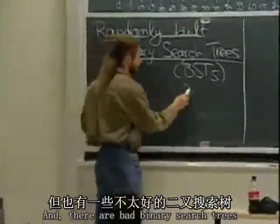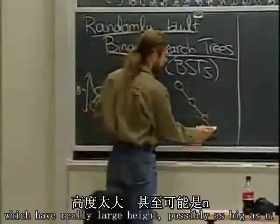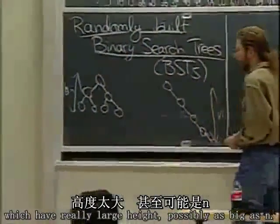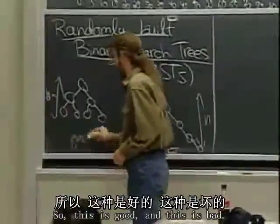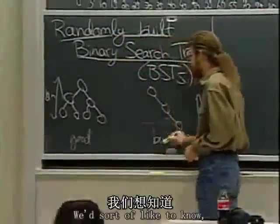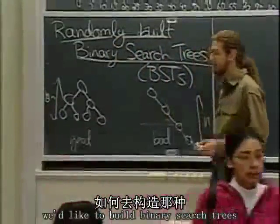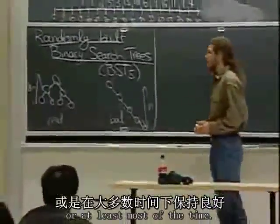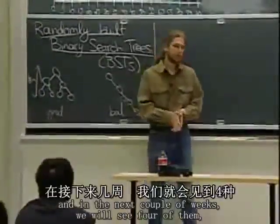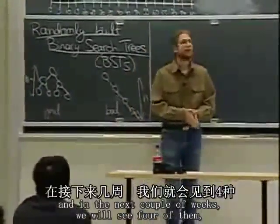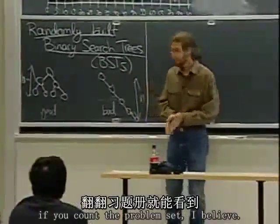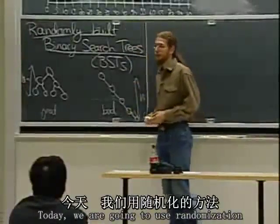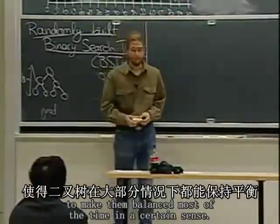And there are bad binary search trees which have really large height, possibly as big as n. We'd like to build binary search trees in such a way that they're good all the time, or at least most of the time. There are lots of ways to do this, and in the next couple of weeks we'll see four of them. Today, we're going to use randomization to make them balanced most of the time in a certain sense.